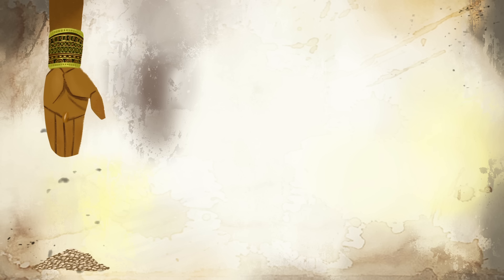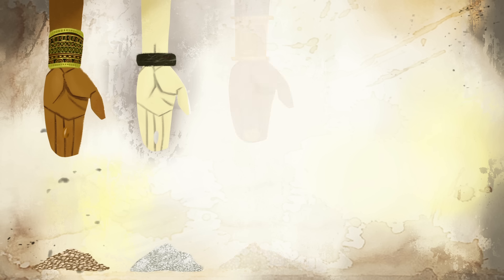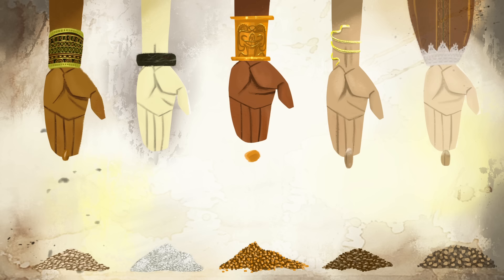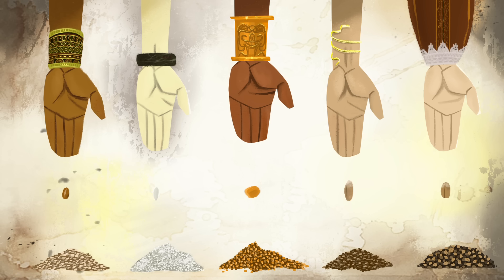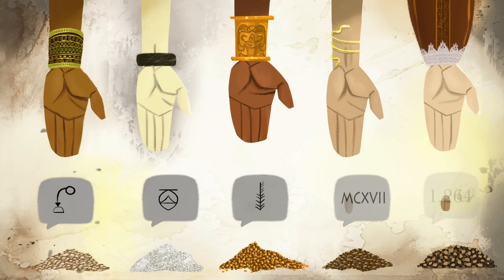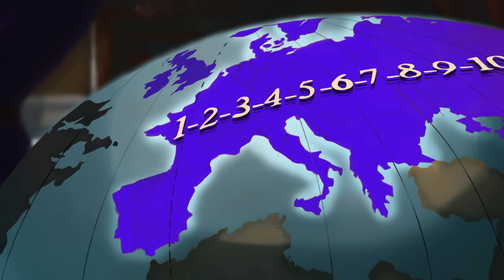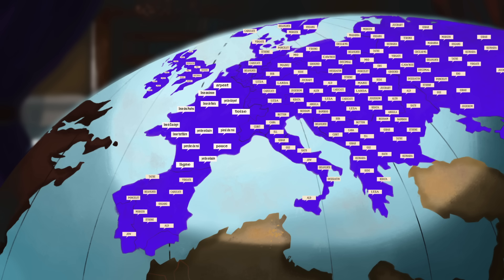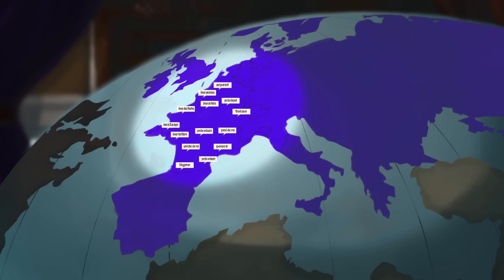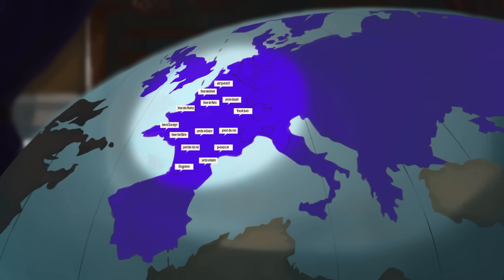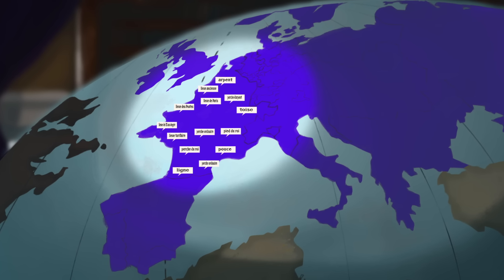For the majority of recorded human history, units like the weight of a grain or the length of a hand weren't exact and varied from place to place. Different regions didn't just use varying measurements — they had completely different number systems as well. By the late Middle Ages, the Hindu-Arabic decimal system mostly replaced Roman numerals and fractions in Europe, but efforts by scholars like John Wilkins to promote standard decimal-based measures were less successful. With a quarter million different units in France alone, any widespread change would require massive disruption.